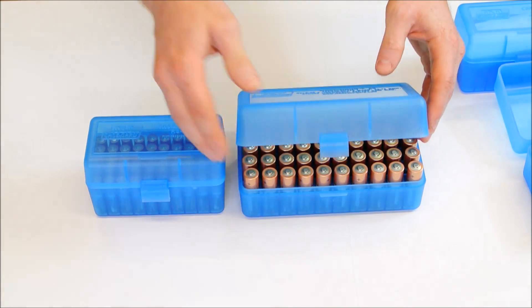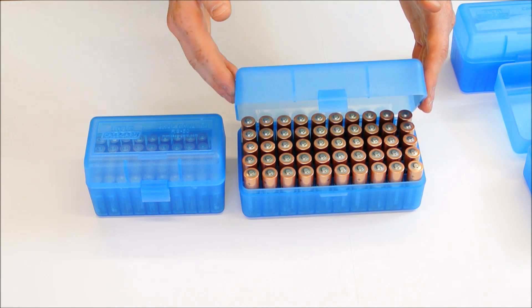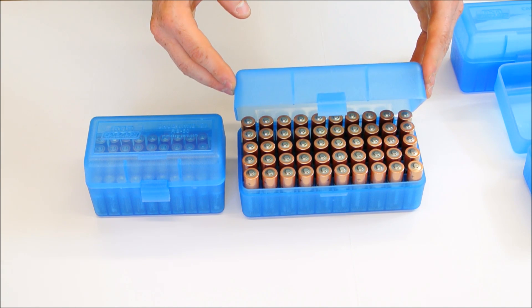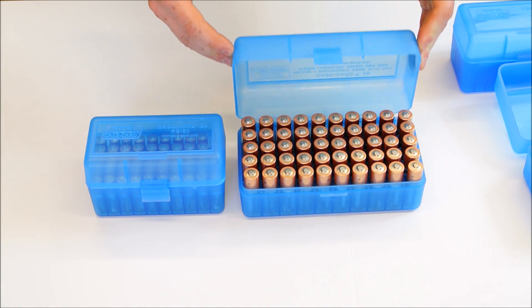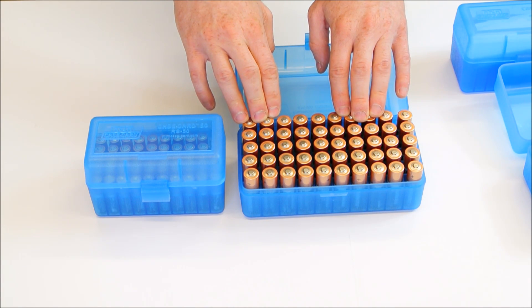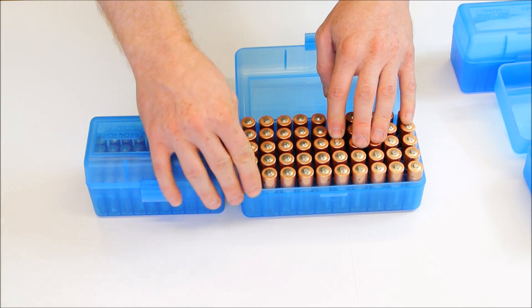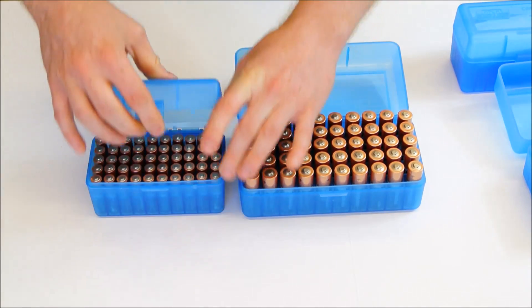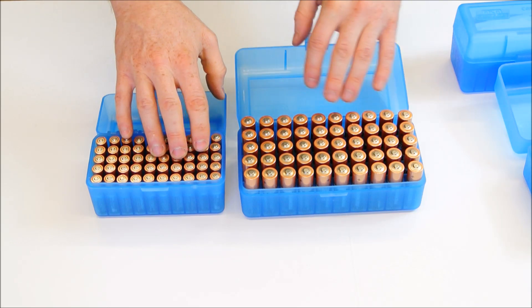So what these are is reloading boxes. These are made by MTM Case Guard, and they're designed for reloaded ammunition, but they happen to fit AA batteries perfectly in this particular size and AAA batteries in this particular size.